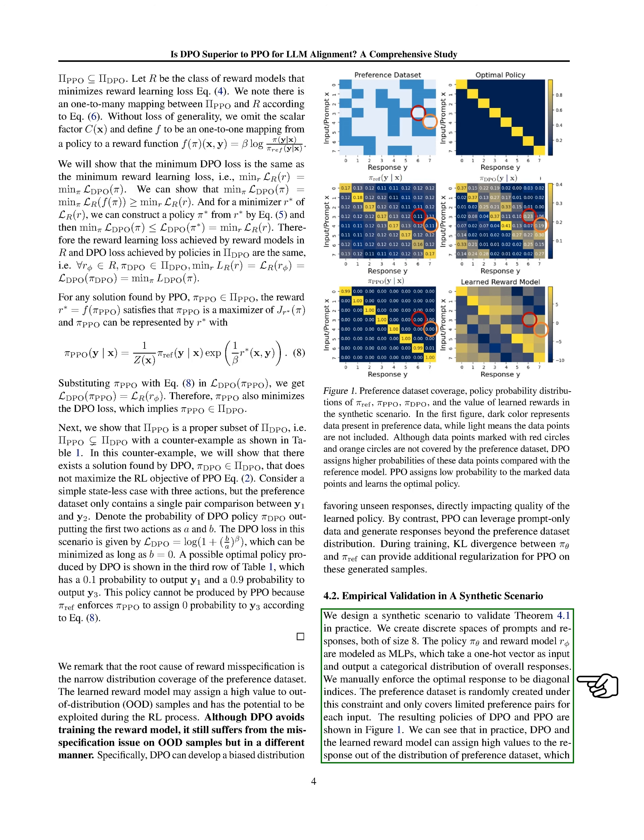We designed discrete spaces with eight options for both inputs and responses. The policy and reward model were represented using multi-layer perceptrons, MLPs, which take a one-hot vector as input and output a distribution of responses.